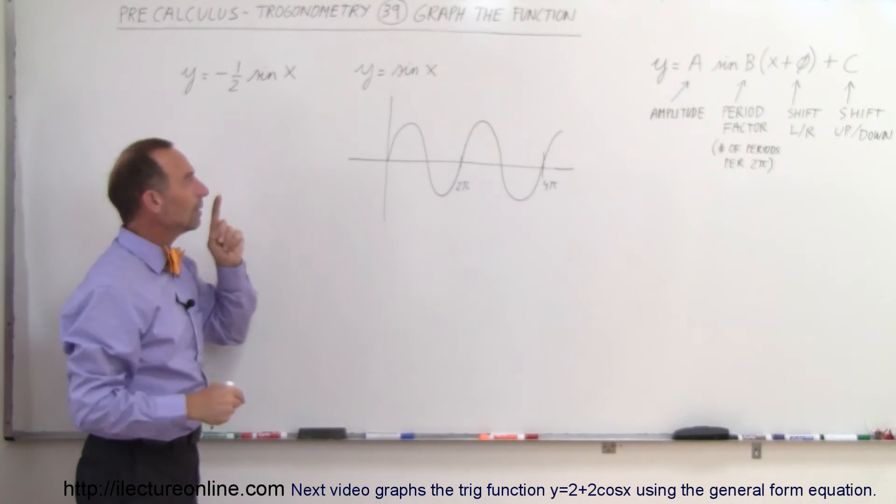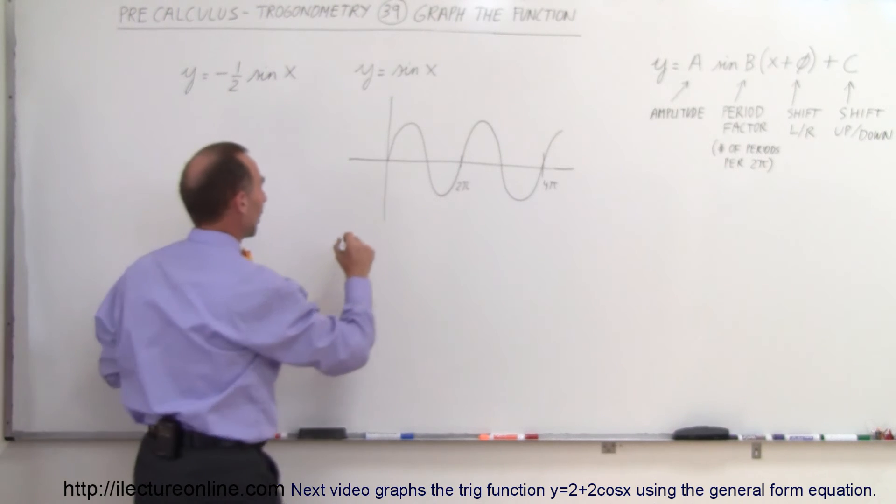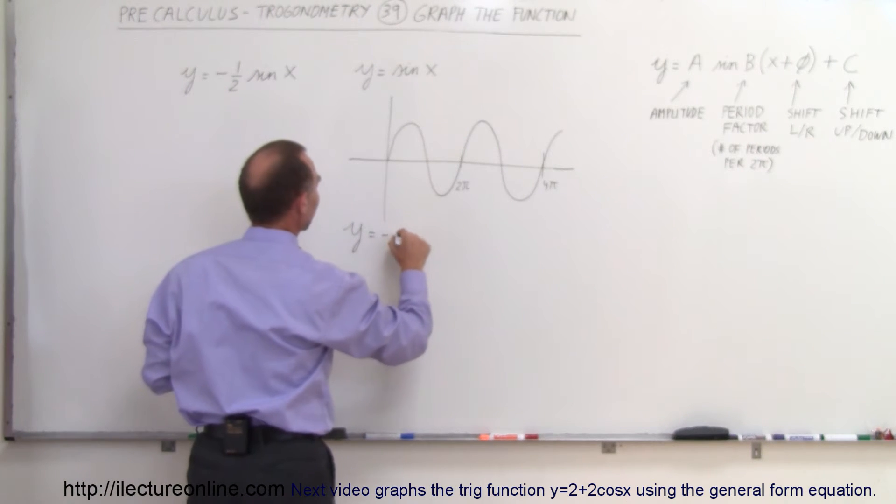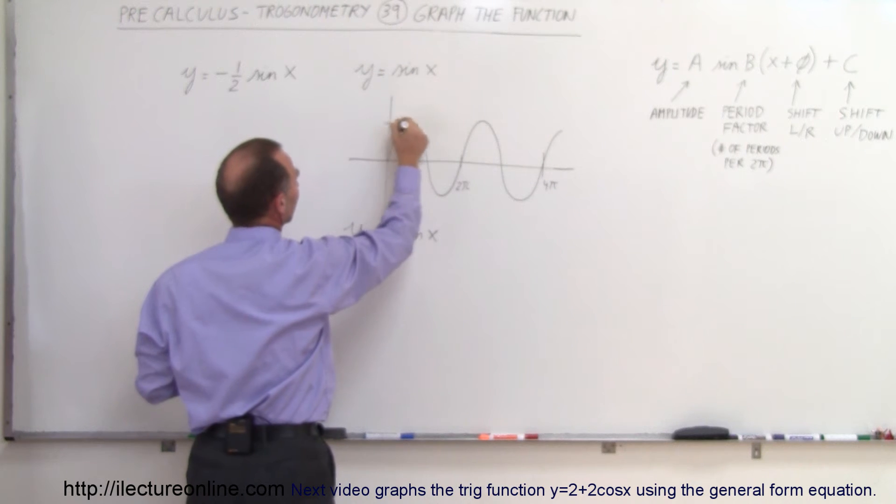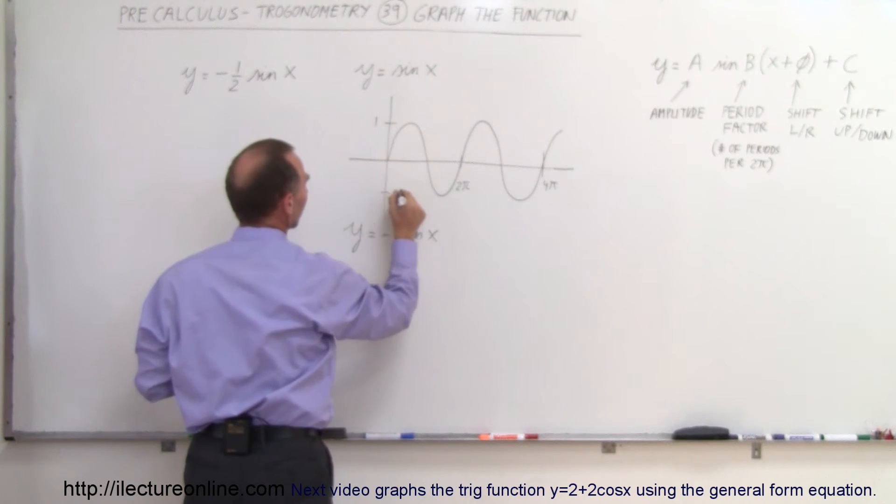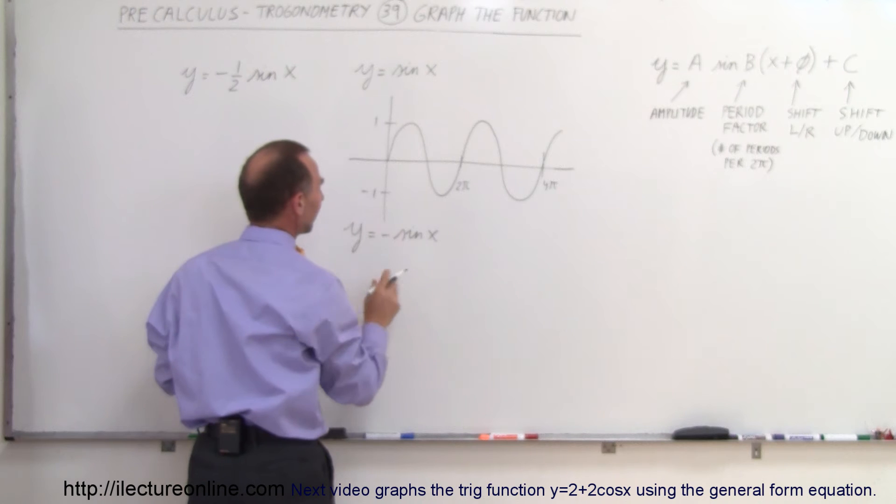Now, how do we graph the negative sine of x? So how do we graph y equals negative sine of x? Remember that since we have a 1 in front here, this is an amplitude from plus 1 to minus 1 like that.